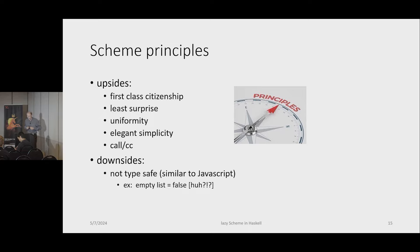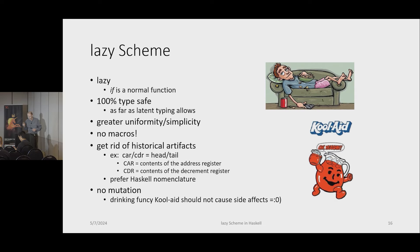There are a lot of principles in Scheme that are very important for the first-class citizenship idea: least surprise, uniformity, elegance, simplicity, call/cc — current continuations — and continuation passing style. That was all pioneered by Scheme. The downside to Scheme is it's not type-safe, and JavaScript has similar problems — for example, the empty list being false makes no sense. We should let the compiler people worry about optimization; we should be as type-safe as possible. My lazy Scheme is truly lazy, so my if function is a higher-order function you can pass as an argument. I tried to make my version of Scheme as 100% type-safe as possible. I also don't like macros because the code I write and the code I see in the debugger are different. So I decided: no macros, no special forms. I got rid of historical artifacts like car and cdr — it's time to use head and tail. And for this version, I have no mutation whatsoever.